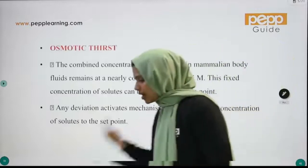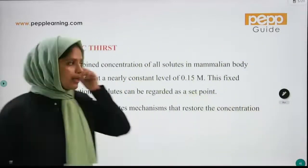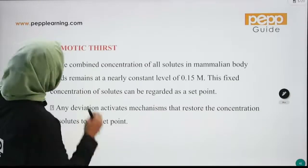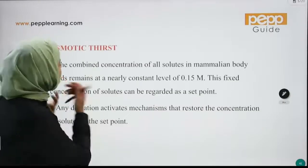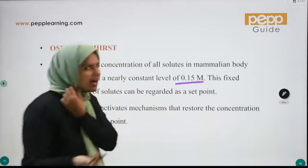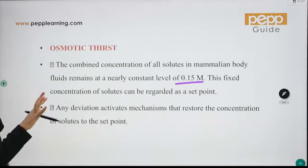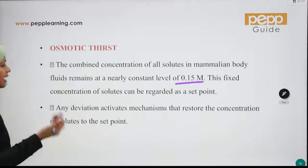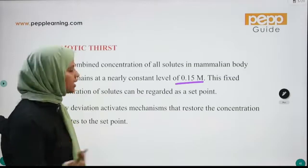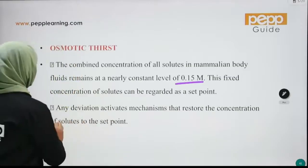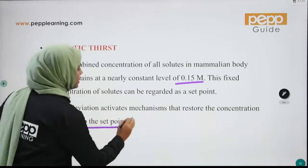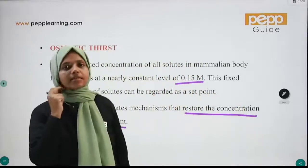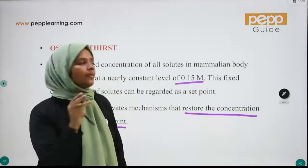In osmotic thirst, the combined concentration of all solutes in mammalian body fluid remains 0.15 molar. If there is a deviation from this level, solutes will restore the concentration. This is the homeostasis balance.